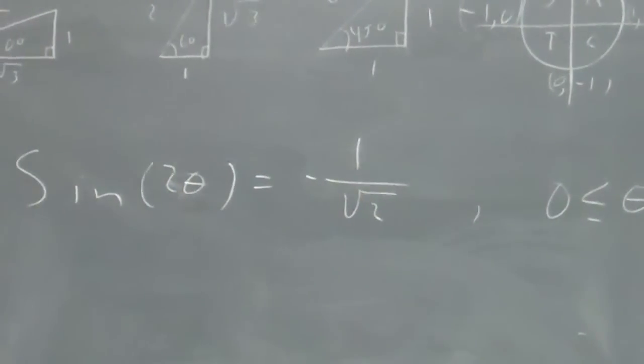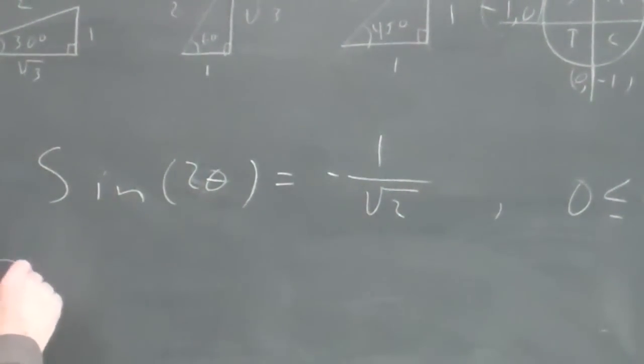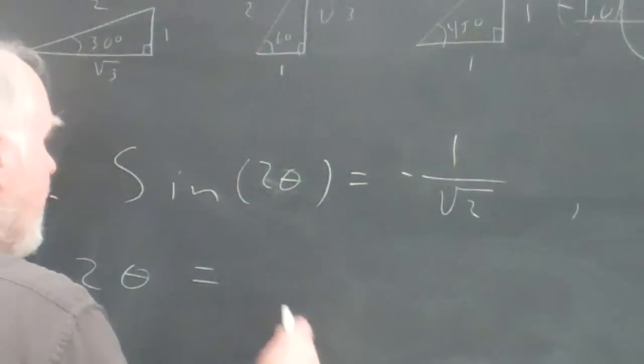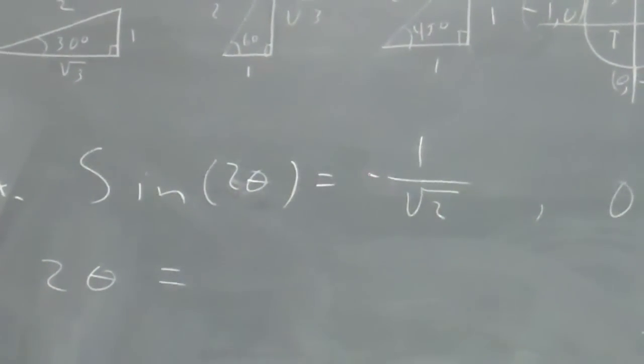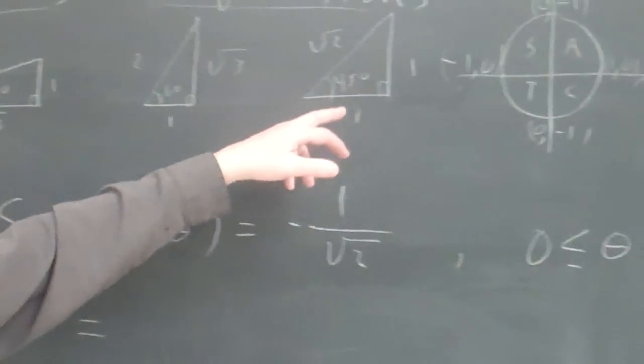And I'm going to solve for that. So I say the sine of what angle will give me negative 1 over the square root of 2? Well, sine is opposite over hypotenuse.